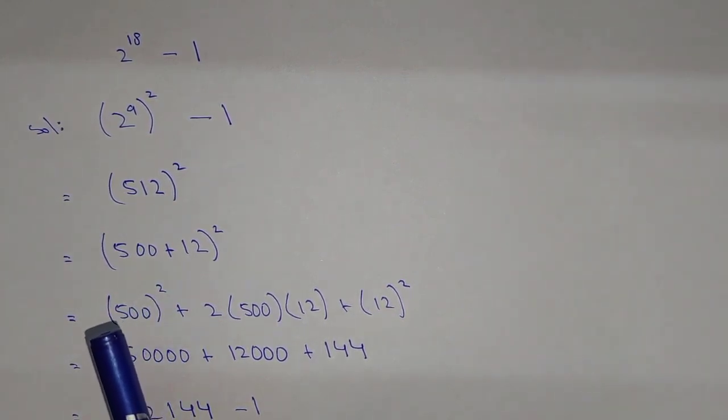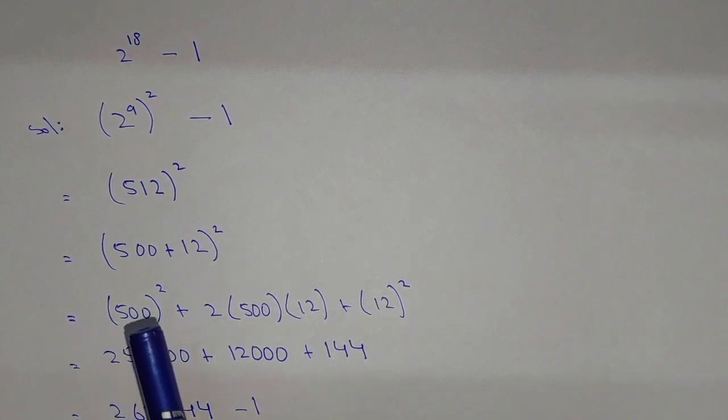500 squared can be calculated as 5 × 5 = 25, and 2 zeros squared means 4 zeros. So 250,000.